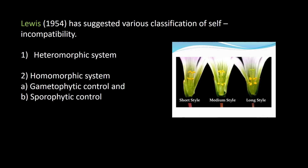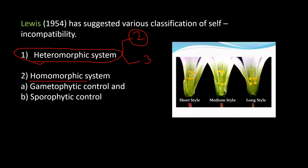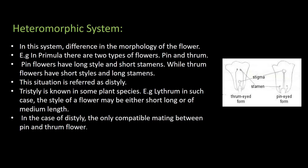In 1954, Lewis, a scientist, suggested a classification of self-incompatibility. He gave a system with two types: the heteromorphic system and the homomorphic system. The heteromorphic system consists of di-stylee and tri-stylee. The homomorphic system is of two types: gametophytic control and sporophytic control.